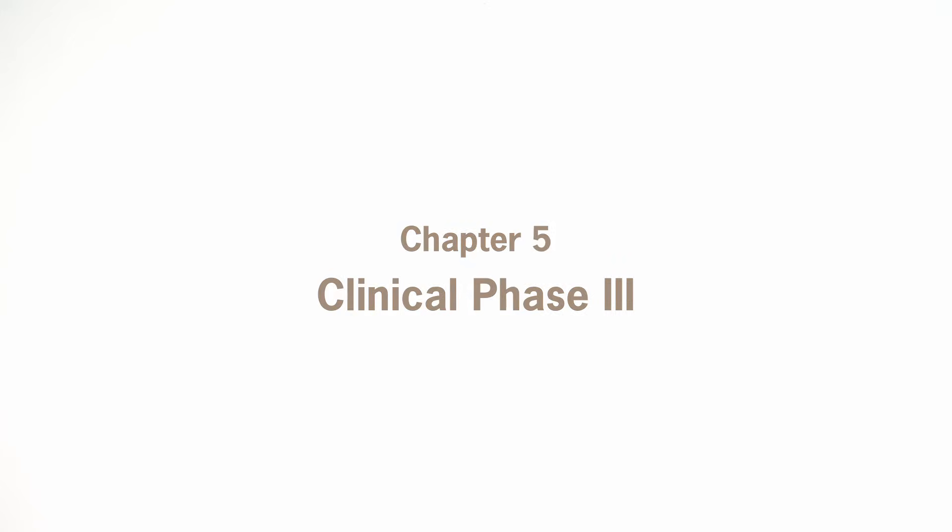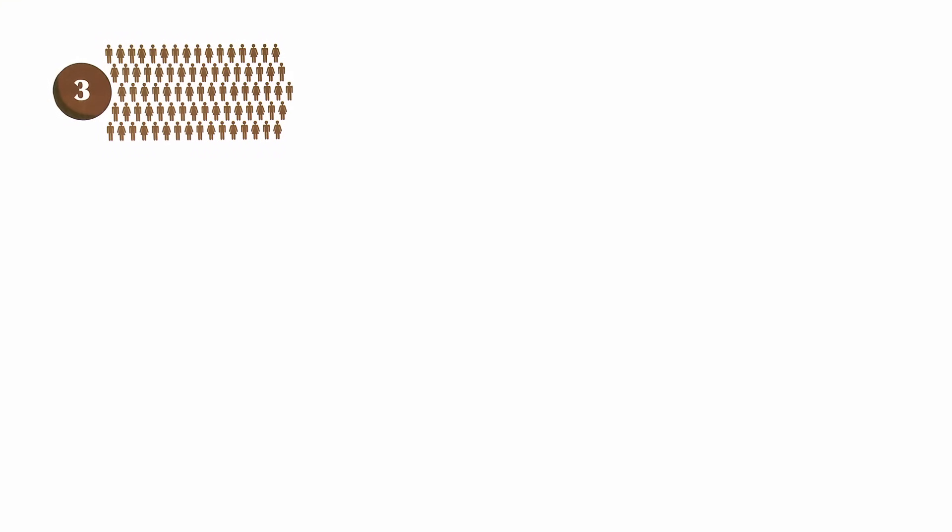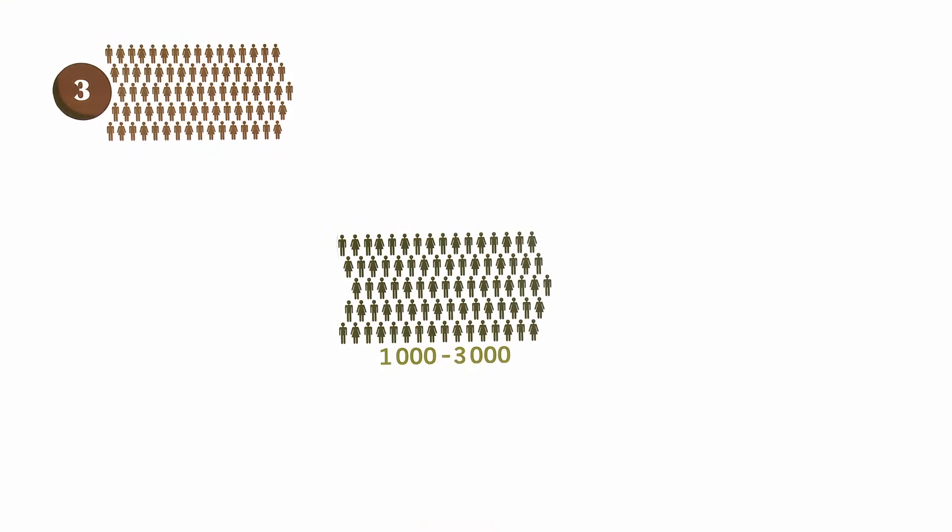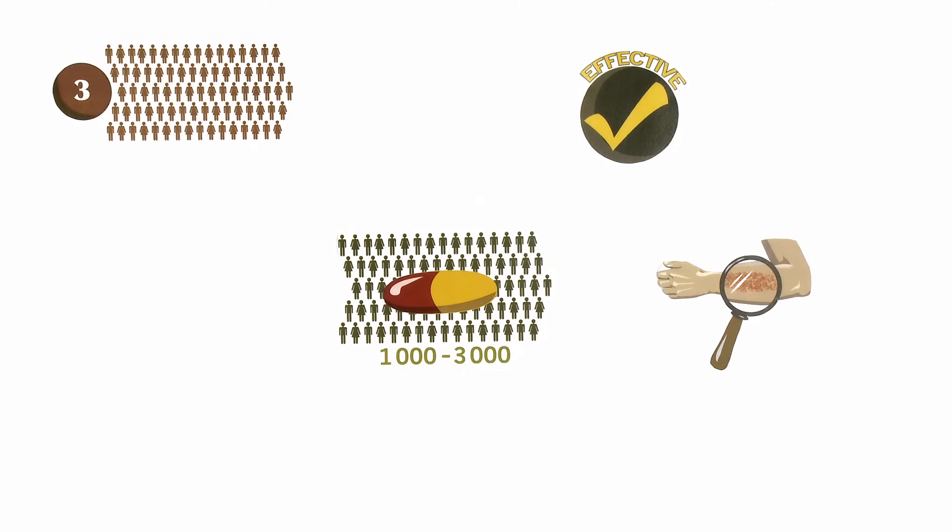In Phase 3 of clinical trials, 1,000 to 3,000 or even more patients are recruited for research with the investigational drug. Phase 3 clinical trials are undertaken to confirm the effectiveness of the new drug, monitor side effects, compare it to established treatments, and gather additional information to allow the drug to be used safely.